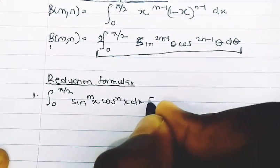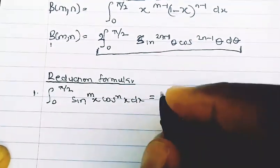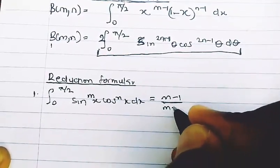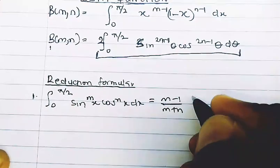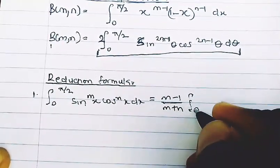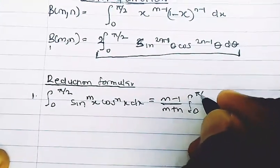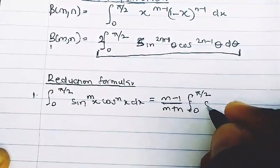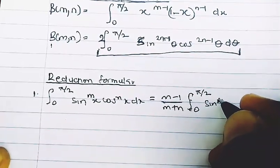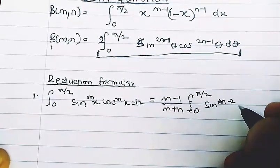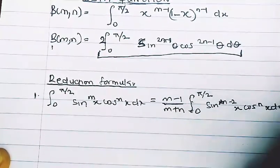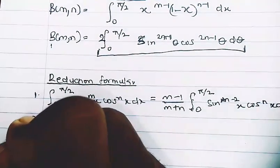...is equal to (m-1)/(m+n) times the integral from zero to pi/2 of sine^(m-2)(x) cos^n(x) dx.